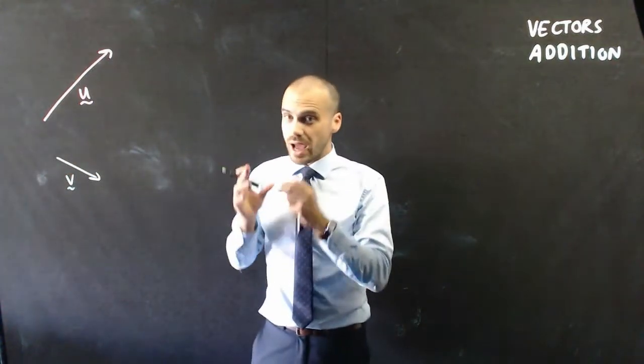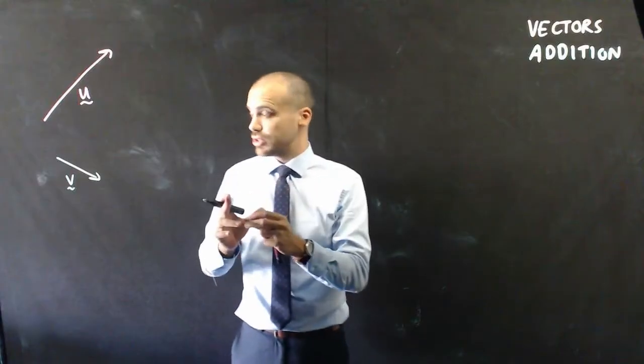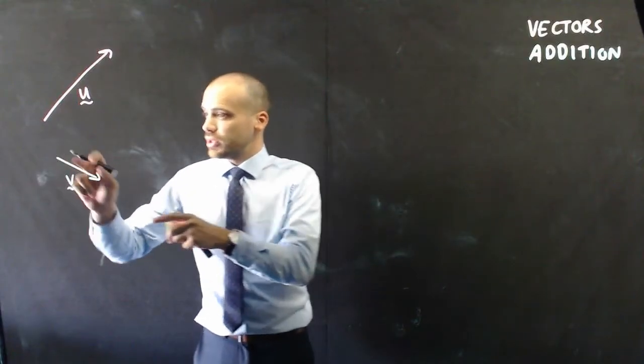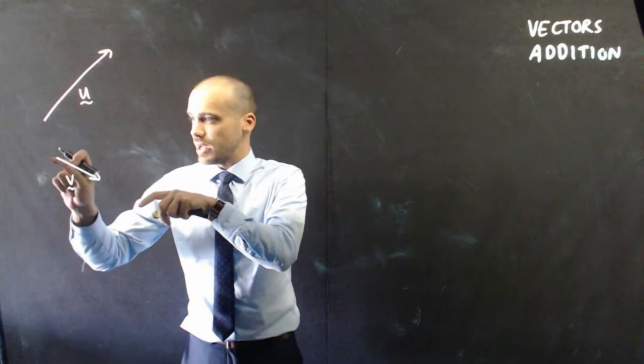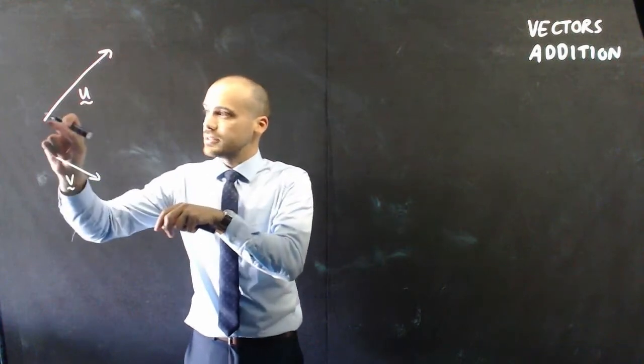Now, if I want to add those two vectors together, it's pretty straightforward. We've got a head here, and a tail here, a head here, and a tail here.